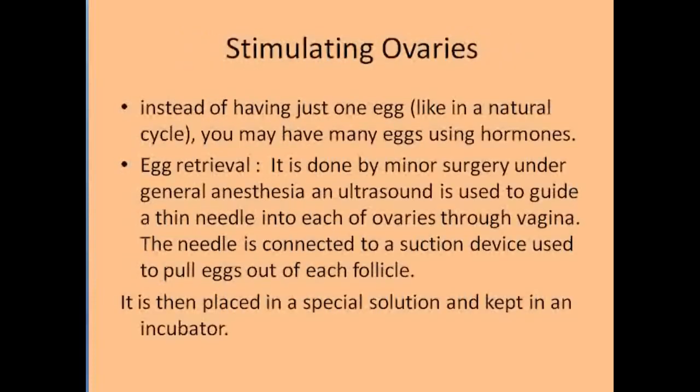Step 1 is stimulating the ovaries. In the human reproductive system, we have studied the menstrual cycle. At the time of the menstrual cycle, one egg is produced every month. But for the IVF treatment process, we need many eggs. Many eggs can be produced by using hormones given by the doctor. So instead of one egg, many eggs will be produced in the female body.